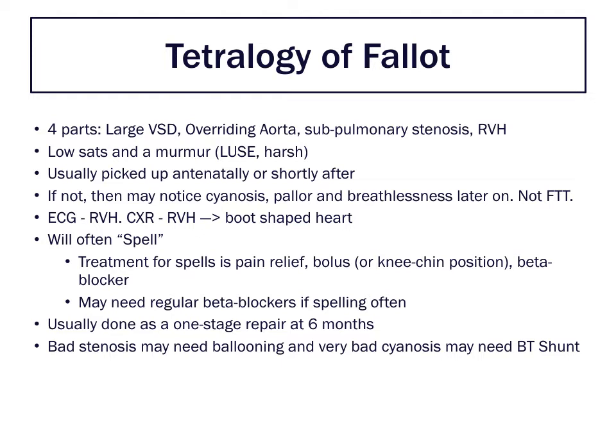Half of it is above the VSD, so basically half of it is getting blood directly from the right ventricle - that is an overriding aorta. You can have more than half of it overriding, but for the purposes of this, just imagine that some blood is going directly from the right ventricle into the aorta. To ensure enough blood goes from right to left - meaning right ventricle to aorta, not right ventricle to left ventricle - you need obstruction of the normal flow.